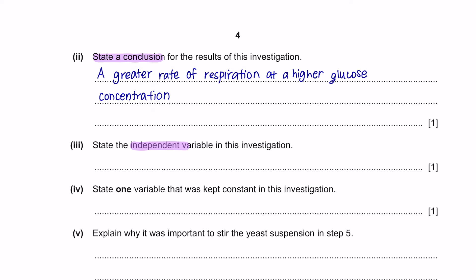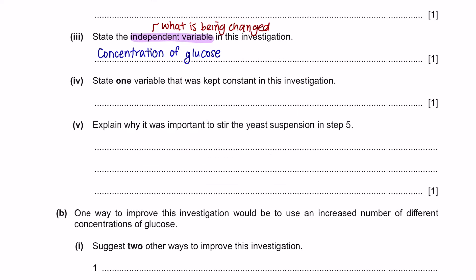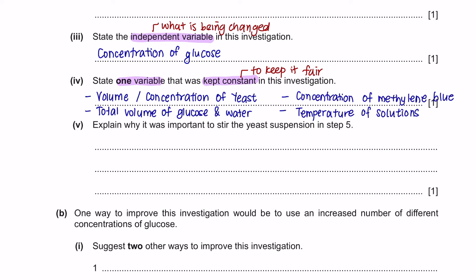Part 3: State the independent variable in this investigation. The independent variable is what is being changed, which is the different concentrations of glucose. Part 4: State one variable that was kept constant. Several variables should be kept constant to keep the experiment fair — you could use the same volume or concentration of yeast, the same volume of glucose and water, keep the concentration of methylene blue constant, or keep the temperature of the solution constant. You are only provided with one mark, so you can mention any one of these.